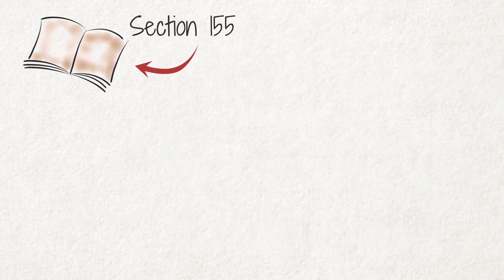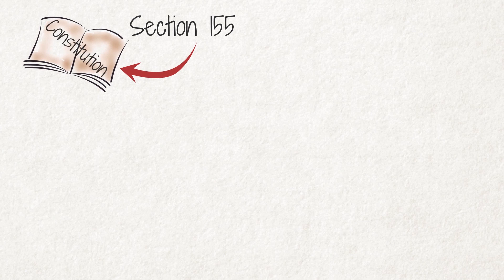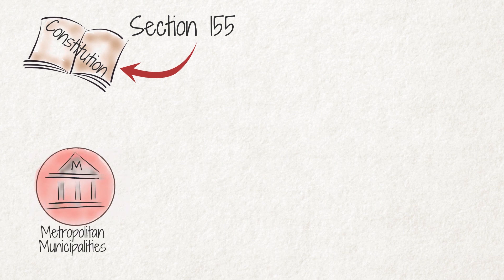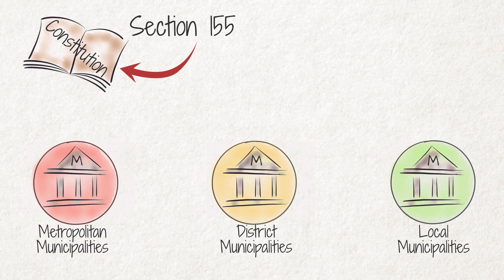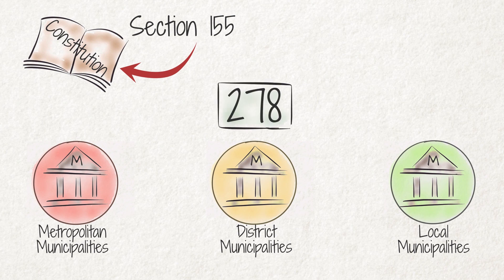Section 155 of the Constitution provides for three categories of municipalities. These are metropolitan, district and local municipalities. In South Africa there are 278 municipalities, comprising 8 metropolitan, 44 district and 226 local municipalities.